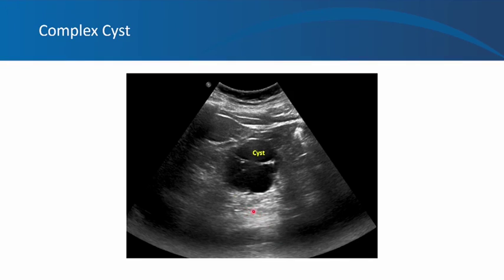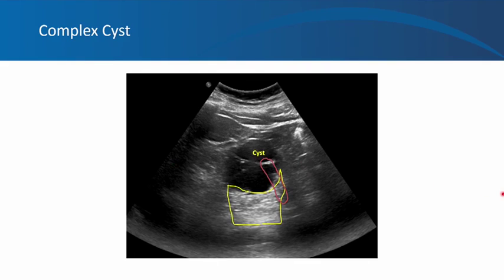The whitish area produces enhancement beneath it due to good sound wave transmission. The internal bright linear structures are fibrous septations — fibrous structures are bright on ultrasound. The brighter structures on these fibrous septae are likely calcifications, which, like stones, can produce shadowing. You can see subtle shadowing within the area of enhancement. Note that calcifications don't always produce shadowing — it depends on their size relative to the ultrasound beam width. Fibrous structures typically don't produce shadowing; they are just bright. This is therefore a complex cystic lesion.